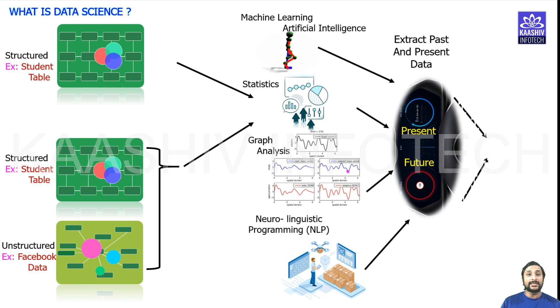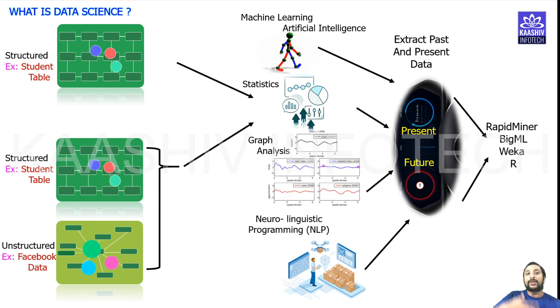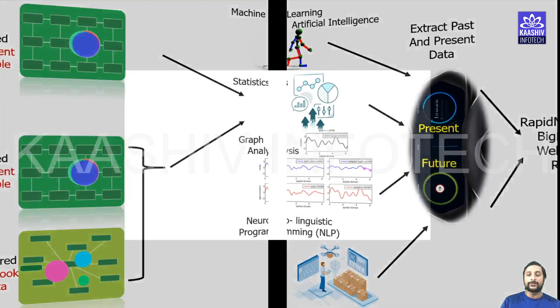Data science is one of the major technologies. It will extract the past and present data, based on which we are able to predict the present and future data. Some of the tools available are RapidMiner, BigML, Weka, R programming, and obviously Python. These are some of the major technologies used in the data science world.